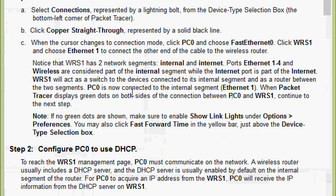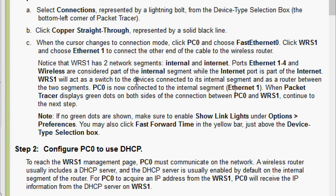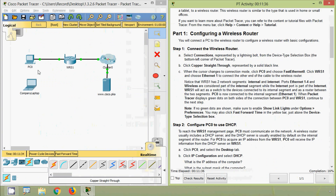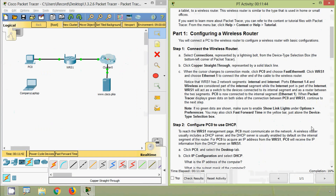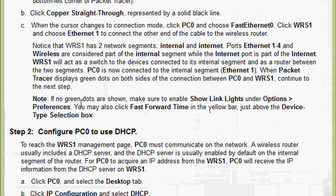Note: WRS1 has two network segments — internal and internet ports. Ethernet1 through 4 and wireless are part of the internal segment, while the internet port is part of the internet. WRS1 acts as a switch to devices on its internal segment and as a router between the two segments. PC0 is now connected to the internal segment. When Packet Tracer displays green dots on both sides of the connection, continue to the next step.